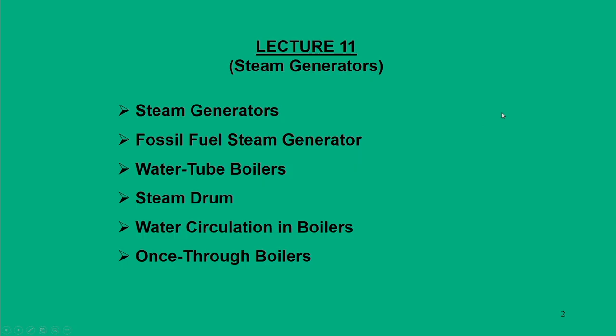Dear learners, greetings from IIT Guwahati. We are in the MOOC course Power Plant System Engineering, module number 2, Vapour Power Systems part 3. In this lecture we are going to focus on the important component of a steam power system, that is the steam generator, and mainly we will talk about the fossil fuel type steam generator, for which the energy is supplied through fossil fuel.